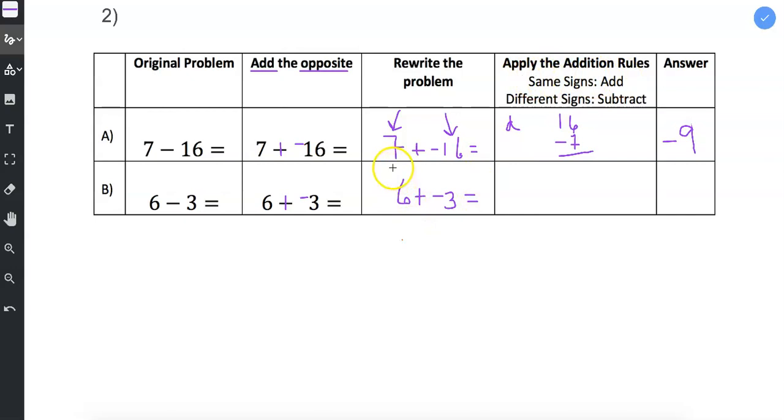And in this example, when we're applying the addition rules, the signs are different. This is a positive 6. This is a negative 3. One's a positive, one's a negative. So the signs are different. So I'm going to put D. And then 6 minus 3 gives me 3.